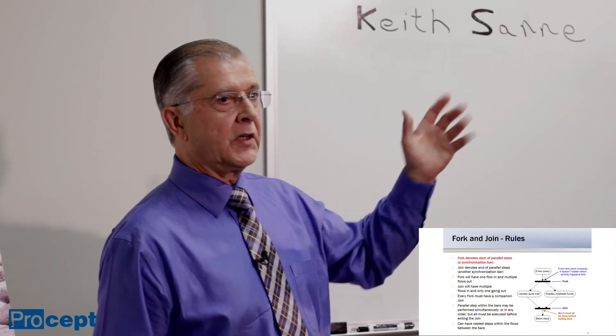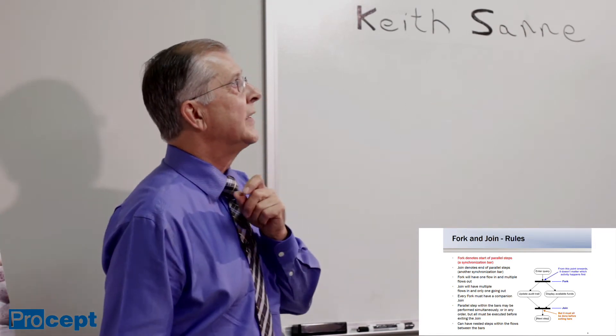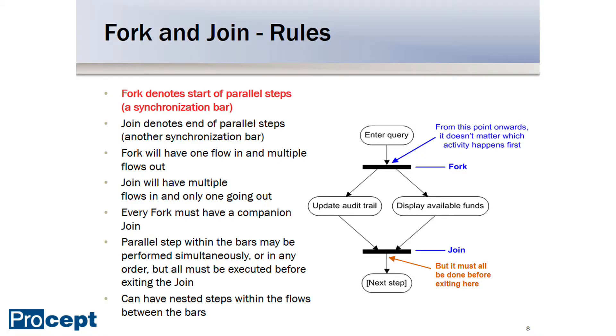Let's go over the rules associated with the fork and join notation. First, denote at the start of the parallel steps, that is the fork, the first synchronization bar. Notice in blue I've pointed it out in the fragment we see here. The join denotes the end of the parallel steps, another synchronization bar. Notice that the fork has one flow in and multiple flows coming out, in this case a couple, but it could be any number.